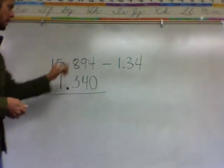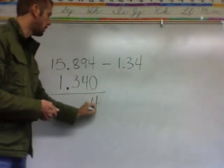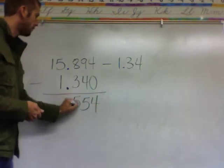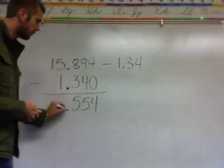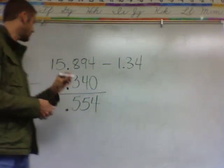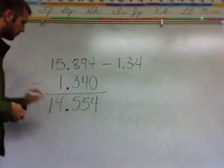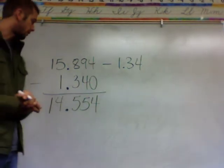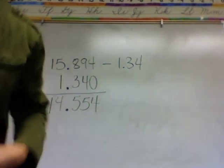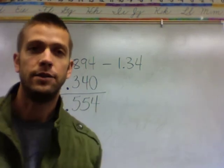And then you can just subtract. 4 minus 0 is 4, 9 minus 4 is 5, 8 minus 3 is 5. The decimal comes straight down when you add or subtract. 5 minus 1 is 4, and the 1 would come straight down. So your answer is 14 and 554 thousandths.